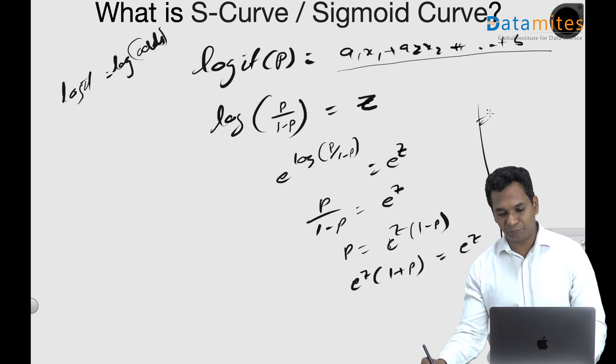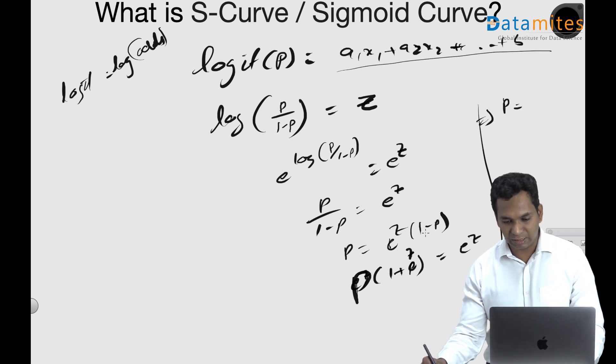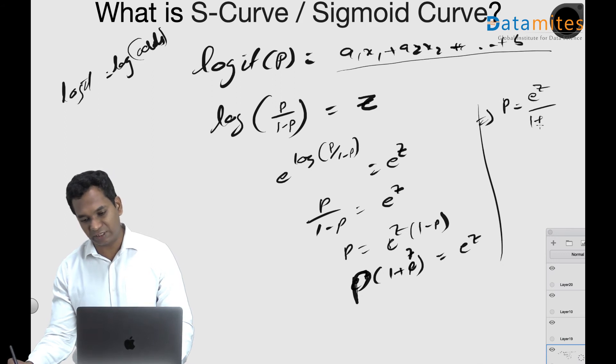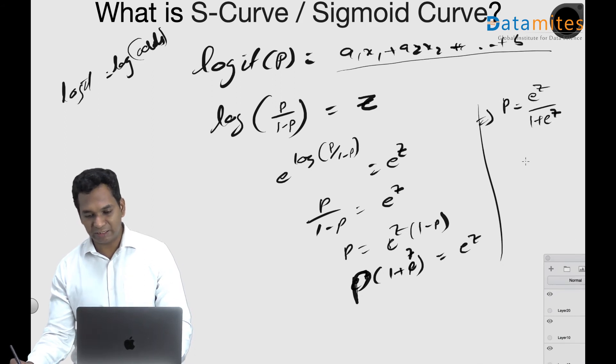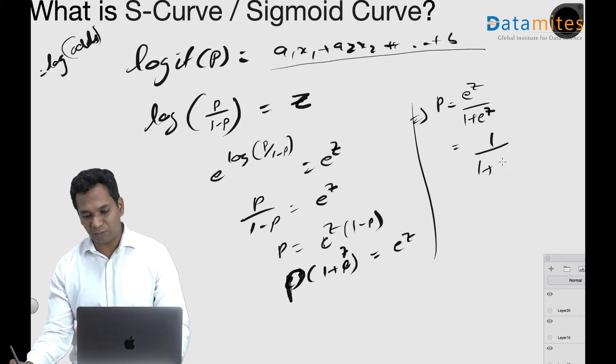If you take p common, p times (e to the power of z plus 1) equals e to the power of z. So essentially p equals e to the power of z divided by (1 plus e to the power of z). And you could divide the entire equation, numerator and denominator, by e to the power of z. That results in 1 by (1 plus e to the power of minus z), and this is your sigmoid function.